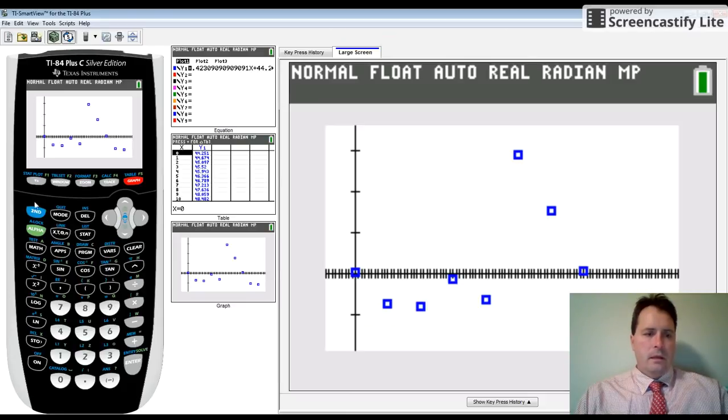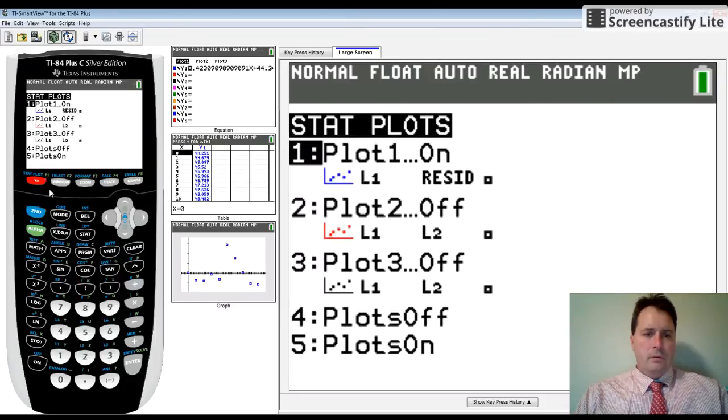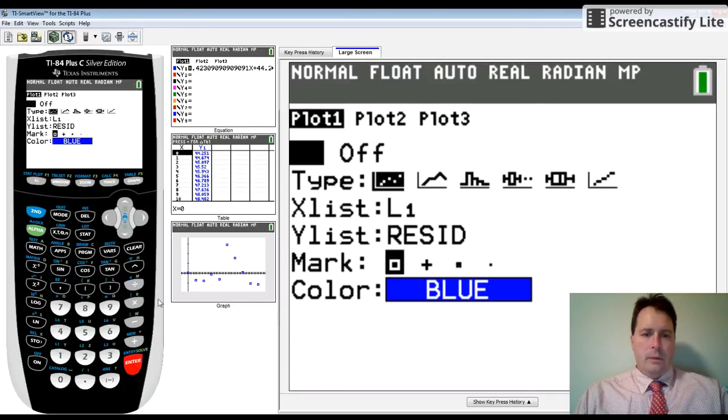If I go back and look at this graph one more time without the residual plot, you need to go back and turn that y list back to L2 just to confirm.